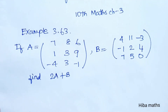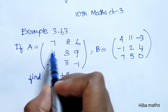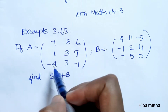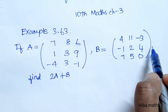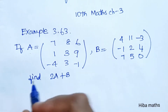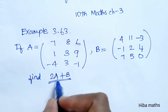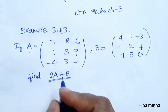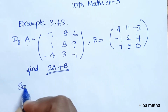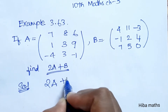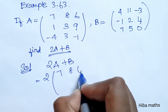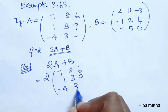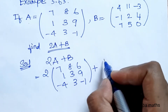Hello students, welcome to Hiba Max 10 Standard, Chapter 3, Example 3.63. If A is equal to [7,8,6,1,3,9,-4,3,-1] and B is equal to [4,1,1,-3,-1,2,4,7,5,0], find 2A plus B. So first we compute 2A plus B: 2 into matrix A, which is [7,8,6,1,3,9,-4,3,-1], plus matrix B.